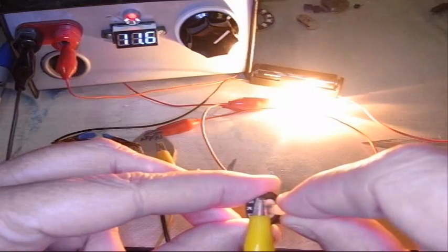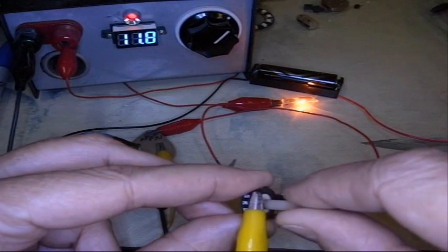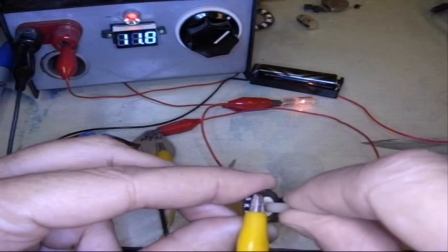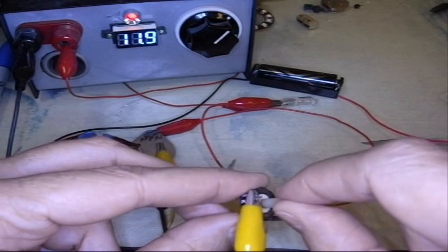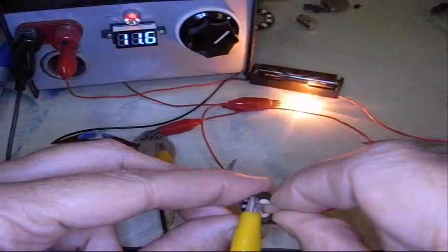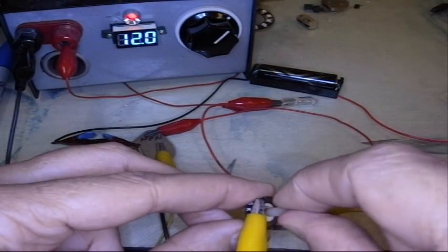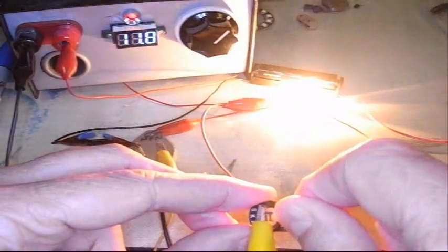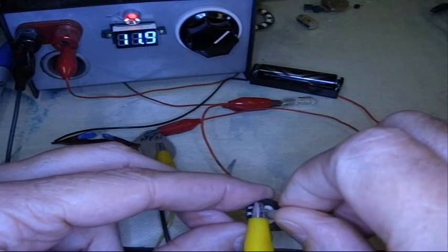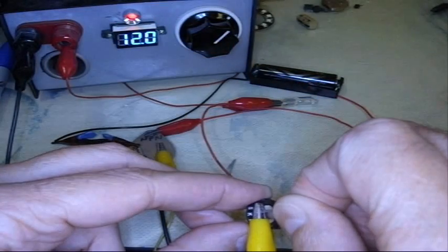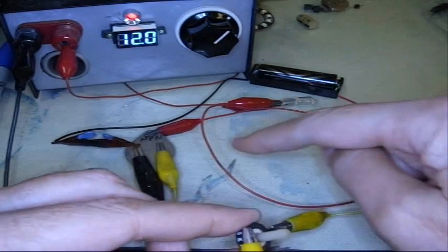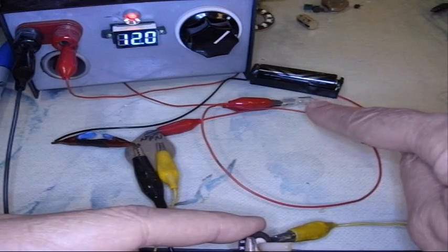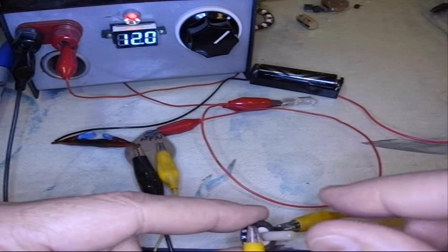And by moving this we can very accurately control the brightness of that light bulb with a very tiny control right here. We can make this get brighter and dimmer. We can just turn on or off, but we can also control the brightness. So we can use the variable resistance of the transistor to change the power passing through the light bulb.